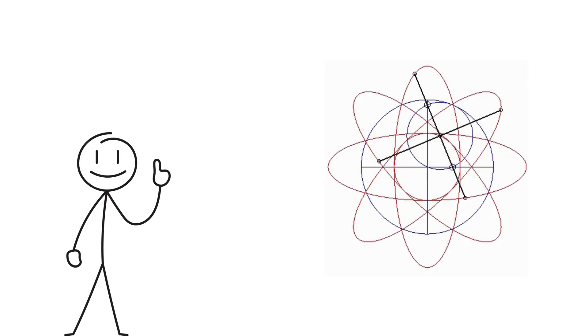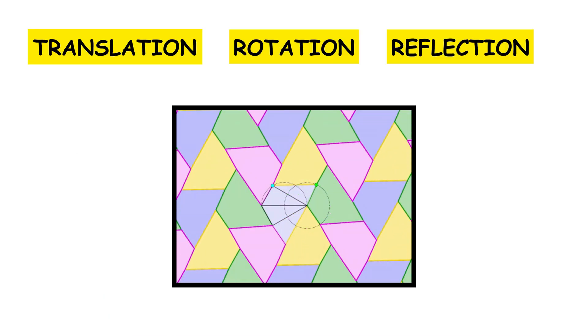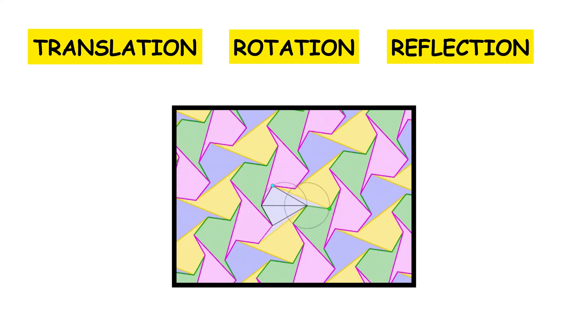Each shape is translated, rotated, or reflected to cover the space uniformly and predictably. Traditionally, it is assumed that symmetry implies periodic repetition. That is, if a pattern has symmetry, whether by translation, rotation, or reflection, we expect it to repeat regularly in all directions.